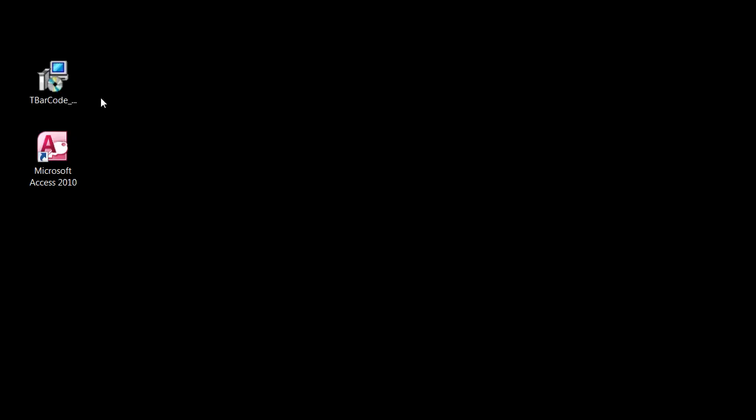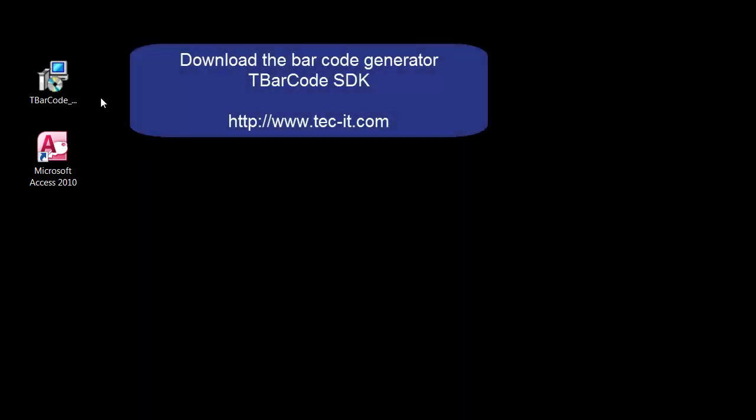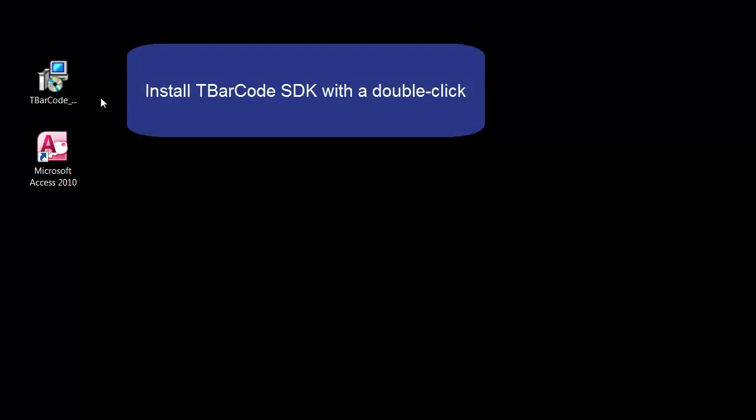In this video, I'll show you how to print barcodes with Microsoft Access Forms. First, download and install tBarcode SDK from www.tec-it.com. This barcode generator ActiveX Control can be inserted into Access Forms easily.